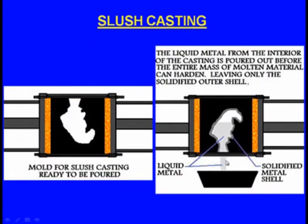The liquid metal drops down and is collected in a container. Close to the mold box, there is a shell which has already solidified. We break the sand and take the casting outside. The casting has a hollow cavity inside without any use of cores. The main advantage of slush casting is that no cores are required for making hollow castings.